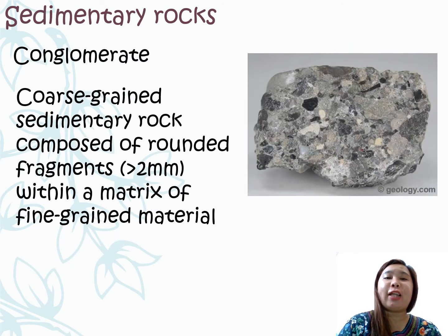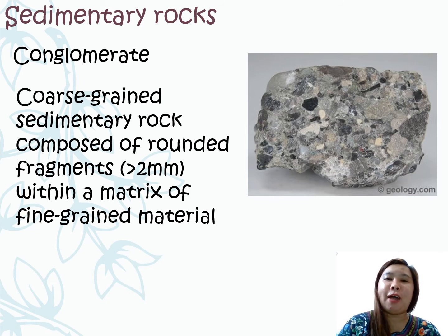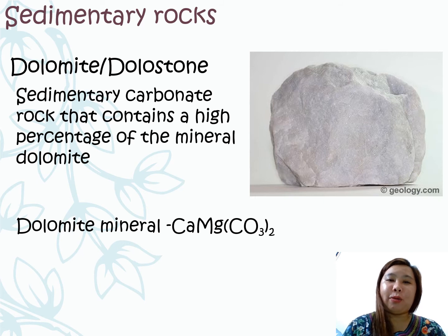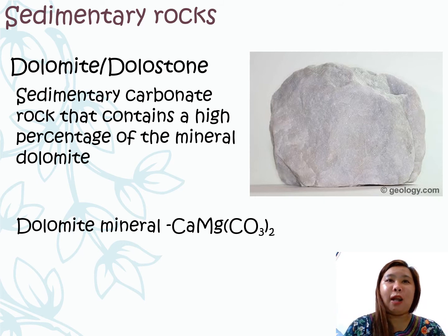Conglomerate is another type of sedimentary rock. It is composed of rounded fragments that are more than 2 millimeters in size within a matrix of fine-grained material. Another example of sedimentary rock is the dolomite or the dolostone. It is a sedimentary carbonate rock that contains a high percentage of the mineral dolomite. Dolomite mineral has a formula containing calcium and magnesium.